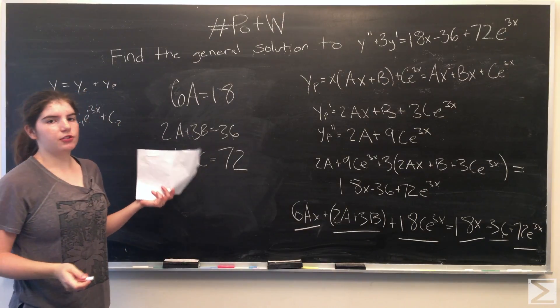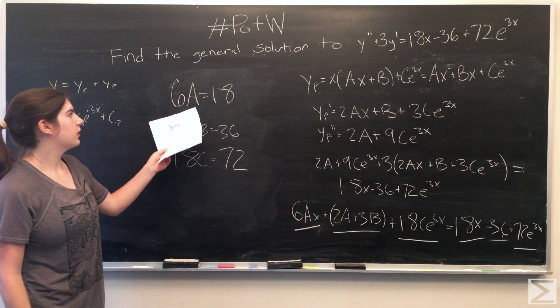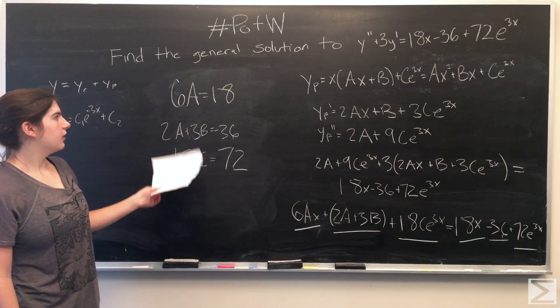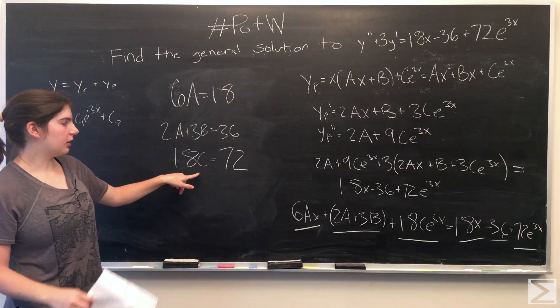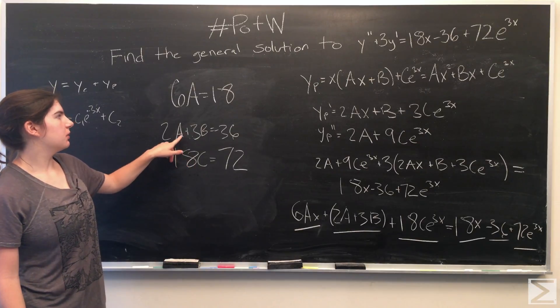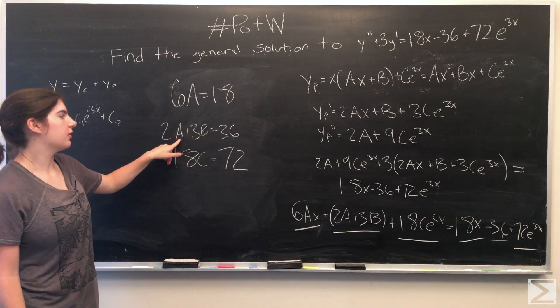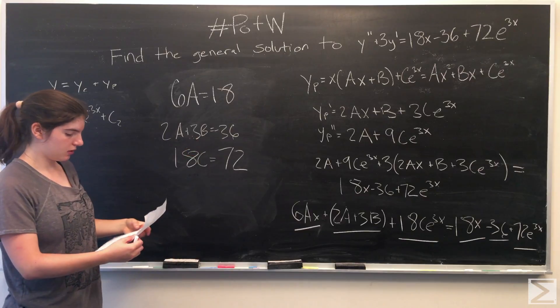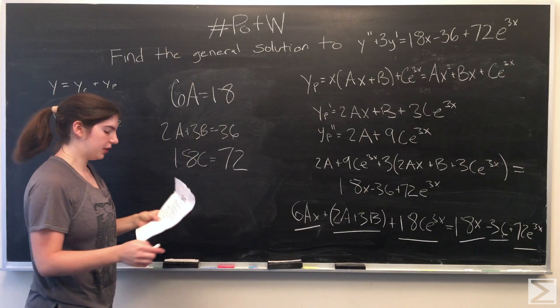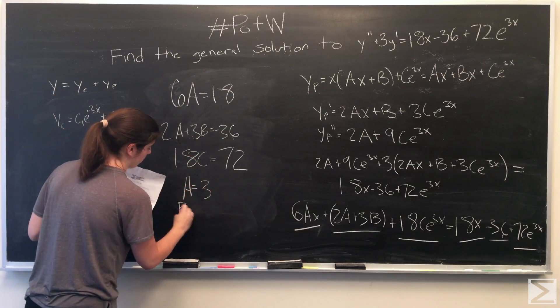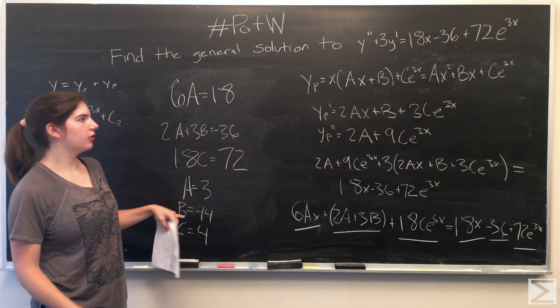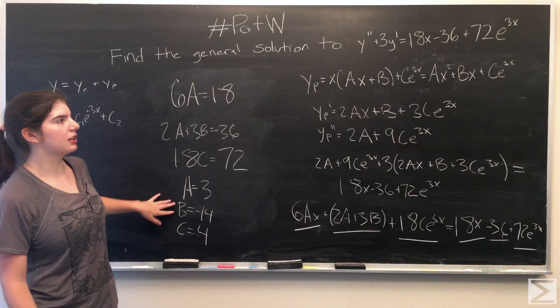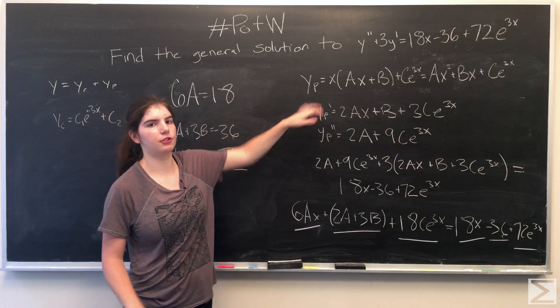Now we can just solve for a, b, and c. Divide both sides by 6 to get a equals 3. Divide both sides by 18 to get c equals 4. And then if you plug in 3 for a, you can solve for b, which is negative 14. Now that we have our coefficients, we can go back and plug a, b, and c into our particular solution.